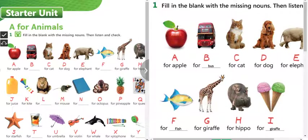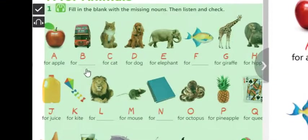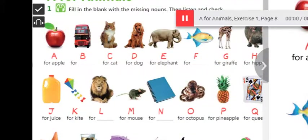This is the first page in the book. We are going to do some exercises here. We have exercise fill in the blank with the missing nouns, then listen and check. So here we have alphabets and you have to finish each word. Okay, so we can listen to the audio. Please listen and try to answer exercise one.